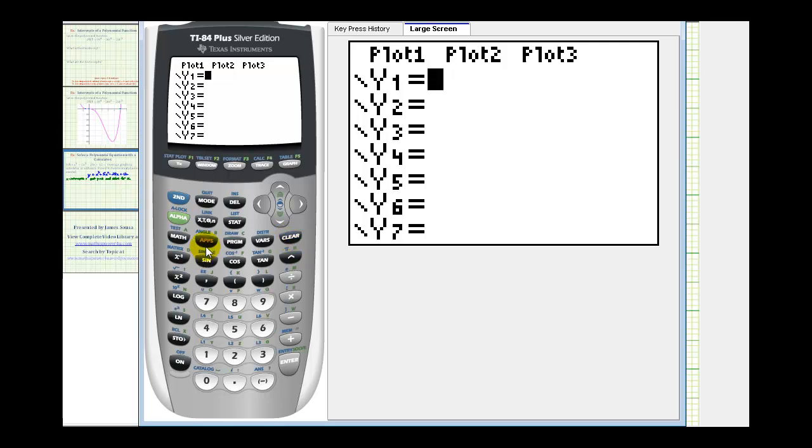Which is x to the third plus 5x squared. Here's the squared key. Minus 28x plus 12.